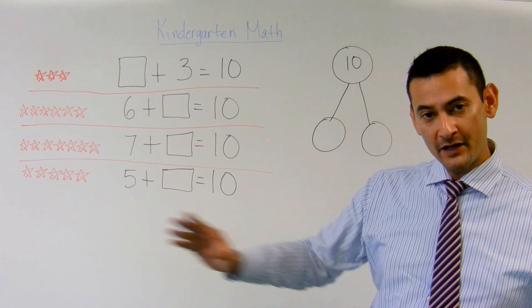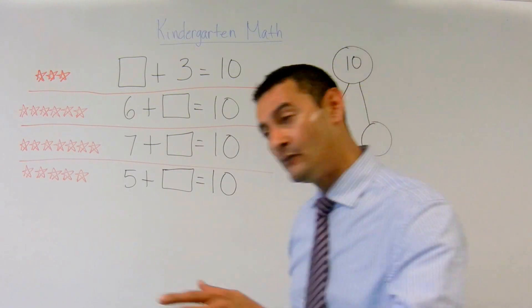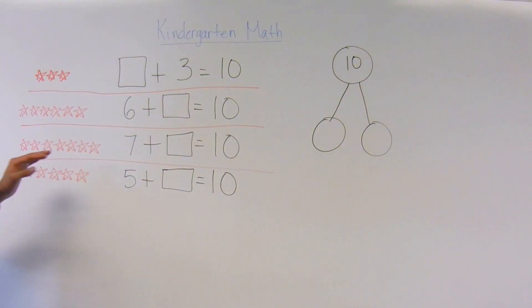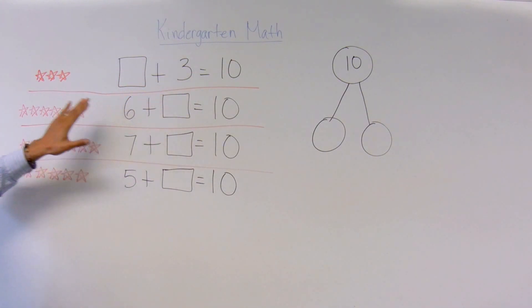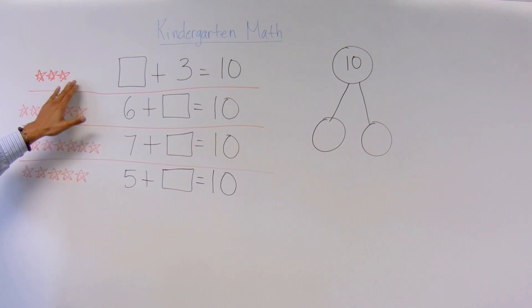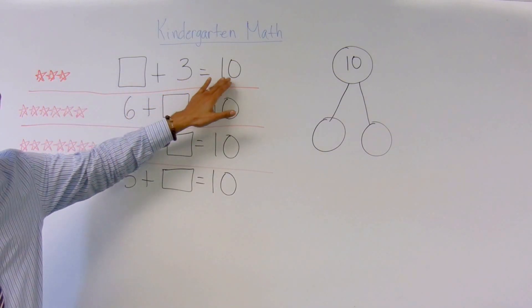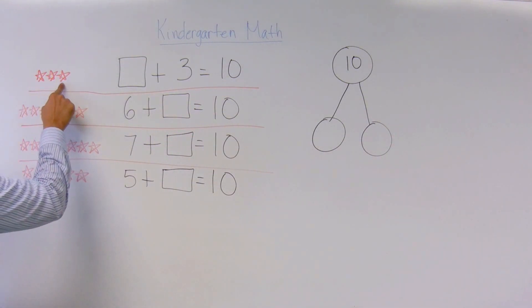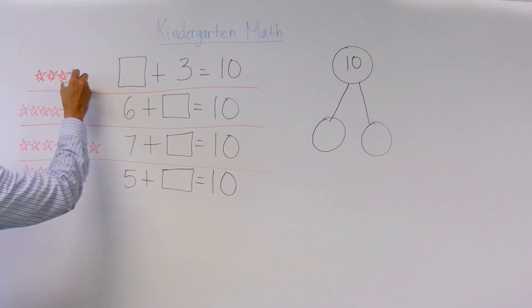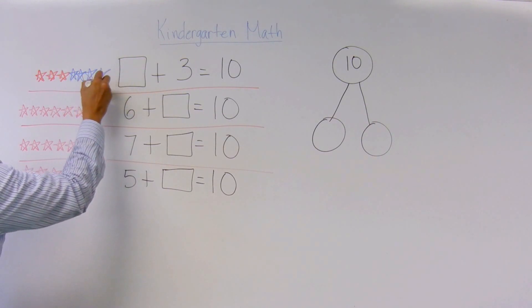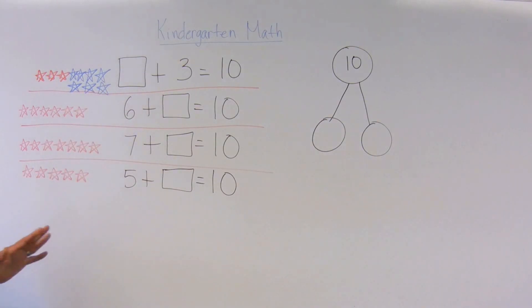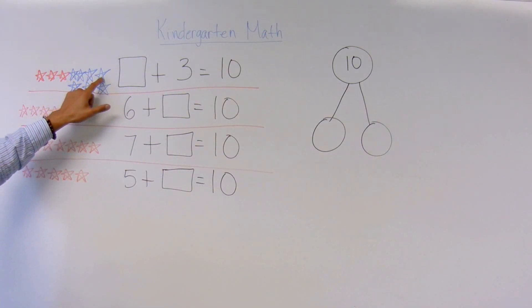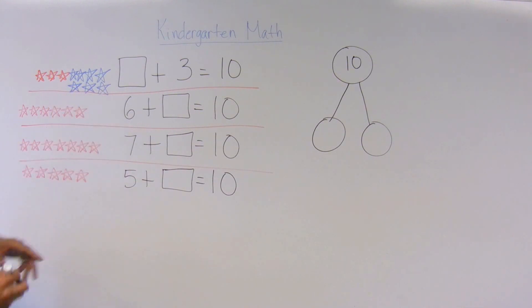The first way, we're going to move over here on this side. I'm going to get this blue marker. Here I've got something plus 3 equals 10. I've got 3 here, so I drew 1, 2, 3 stars. So we're going to draw more stars until we get to 10. We count up: 1, 2, 3, 4, 5, 6, 7, 8, 9, 10. How many blue stars do I have? 1, 2, 3, 4, 5, 6, 7. So 7 plus 3 equals 10.